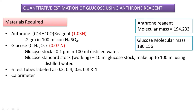The next thing we need is a stock glucose solution of normality 0.07. To prepare 100 ml, take 0.1 gram of glucose and dissolve in 100 ml distilled water — that is the stock solution. Using that stock solution we need to prepare a working glucose solution by taking 10 ml from the stock and making up to 100 ml with distilled water. We also need 6 test tubes labeled 0.2, 0.4, 0.6, 0.8, 1, and test, representing glucose samples of different concentrations.